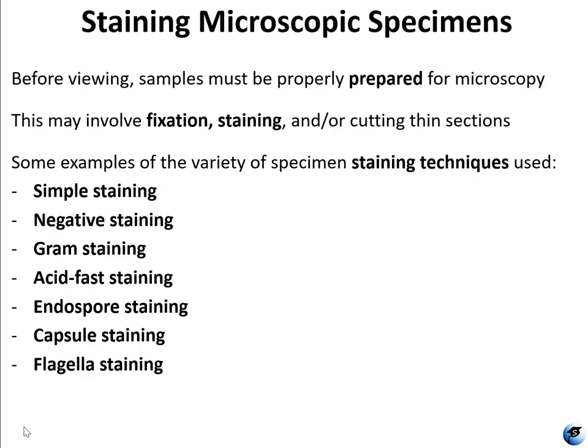Before viewing, samples must be properly prepared for microscopy. This may involve fixation, staining, and sometimes, if you're looking at muscles or similar tissue in human medicine, you may have to cut things into thin sections. Some examples of the variety of specimen staining techniques — and we are going to be looking at all of these in lab — include simple, negative, gram, acid fast, endospore, capsule, and flagella staining.